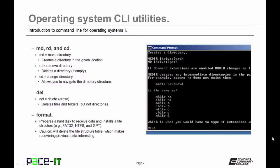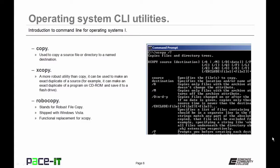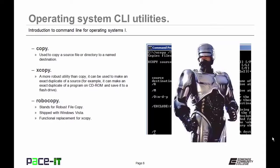The format command prepares a hard disk to receive data and installs a file structure such as FAT32, NTFS, or GPT. Caution: if you use the format command, it will delete the file structure table, making recovering previous data rather difficult. For copy commands: copy is used to copy a source file or directory to a named destination; XCopy is more robust — it can make an exact duplicate of a source and can duplicate a program onto a CD-ROM or flash drive; Robocopy (robust file copy) shipped with Windows Vista and newer and is the functional replacement to XCopy, being even more robust.